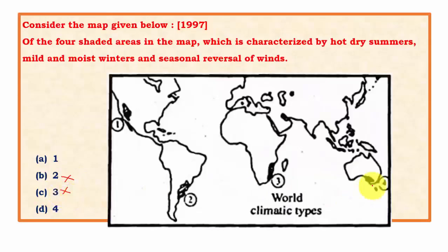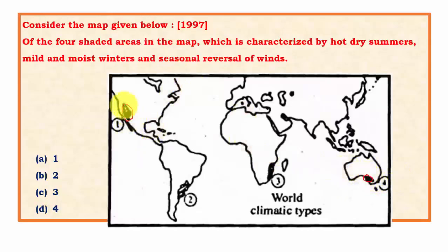Southern Australia has the Swanland region and western parts under Mediterranean type, and southern parts under British type. The San Francisco region comes under Mediterranean type. The key factor is seasonal reversal of winds - while both San Francisco and southern Australia regions come under Mediterranean type, the seasonal reversal of winds occurs in the San Francisco region but not southern Australia. So the answer is region 1.